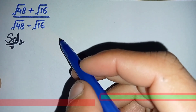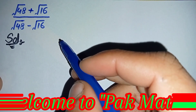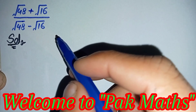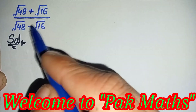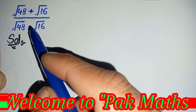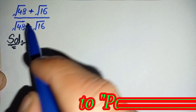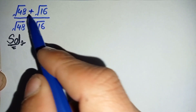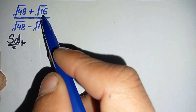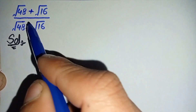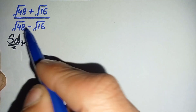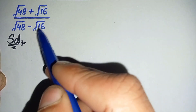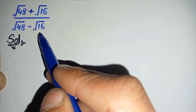Hi everyone, welcome to Parkmas. In this video I'm going to solve this nice radical math problem: square root of 48 plus square root of 16, divided by square root of 48 minus square root of 16.